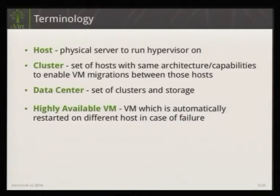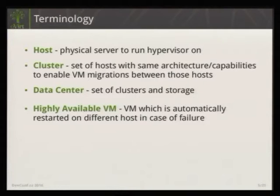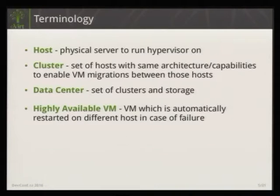By default, if a VM runs on one host and that host crashes or stops working, the VM is not restarted automatically. If we detect the host is really down, we mark it as down and it's up to the administrator what to do with that VM. But if the VM is configured as highly available, we want to run it on a different host as fast as possible. So if we detect that the host crashed, we need to make sure the VM is no longer running and not accessing storage, and once we're sure of that, we execute it on a different host. This is what we call a highly available VM.